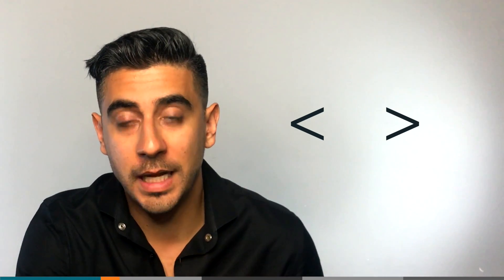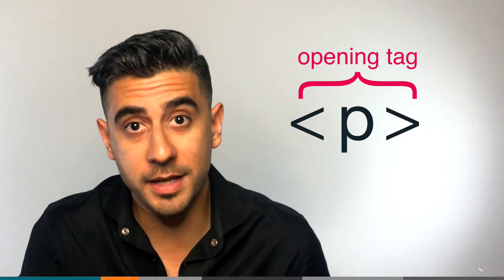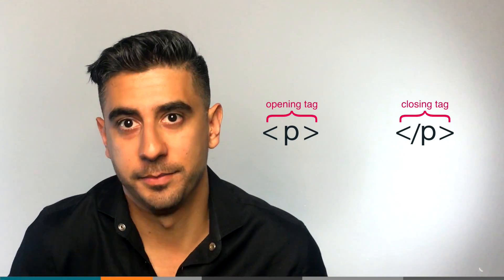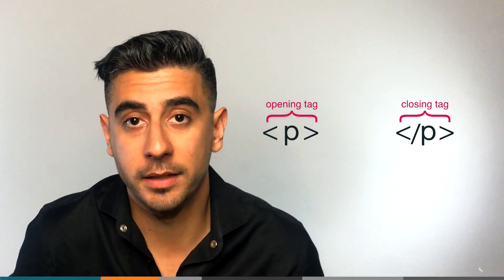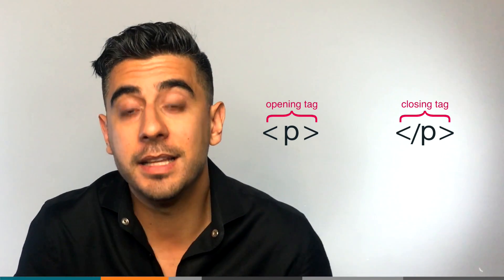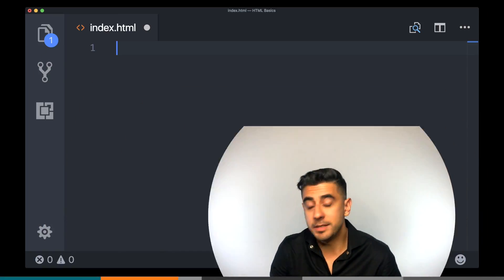All elements are created the same way. You do a left arrow and then a right arrow, and then you put the name of your tag in between. In this case, a P. This whole thing is called your opening tag. You also need a closing tag, which is exactly the same as the opening tag, except with an extra slash. So you end up with an opening tag and a closing tag. Anything you put between these two becomes a paragraph — the thing that the browser will actually show you.